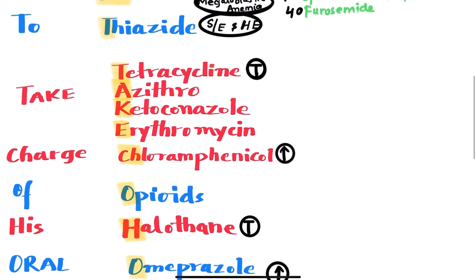The TAKE stands for antibiotics that should be avoided in cirrhotic patients. T is for tetracycline, A is for azithromycin, K is for ketoconazole, and E is for erythromycin. They are all hepatotoxic.